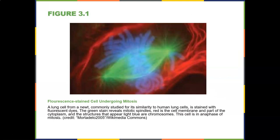Here's a nice image — a fluorescence-stained cell undergoing mitosis. This is a lung cell from a newt, commonly studied for its similarity to human lung cells, stained with fluorescent dyes. The green stain reveals mitotic spindles, red is the cell membrane and part of the cytoplasm, and structures that appear light blue are the chromosomes. This cell is in anaphase. We'll talk about the phases of mitosis later in this lecture.